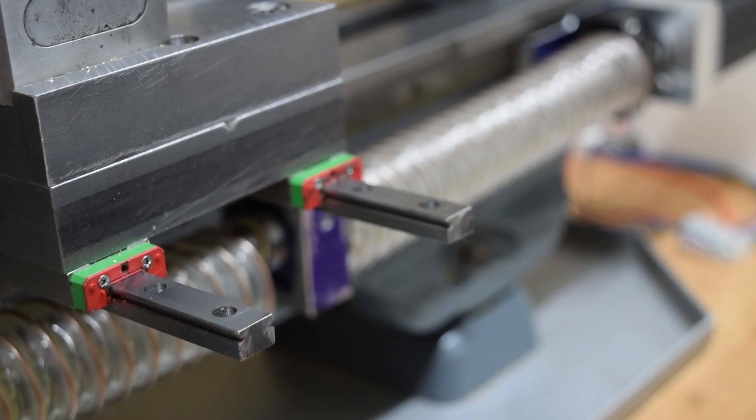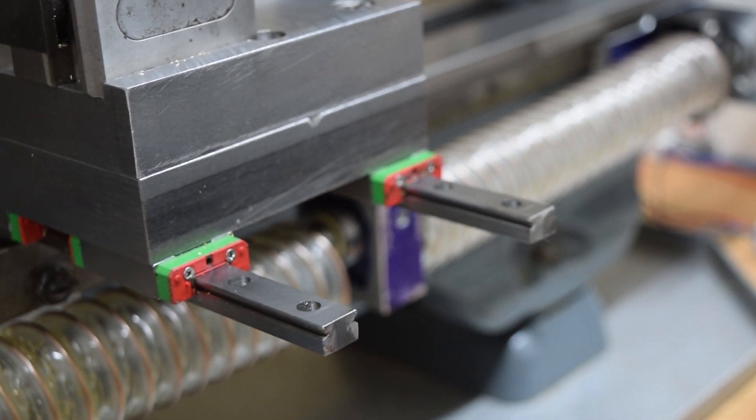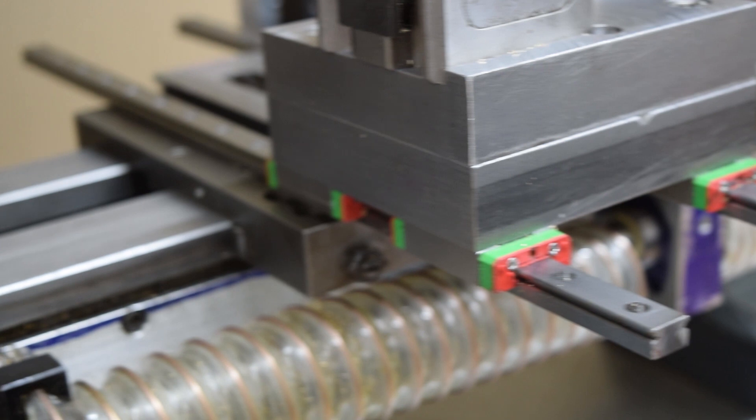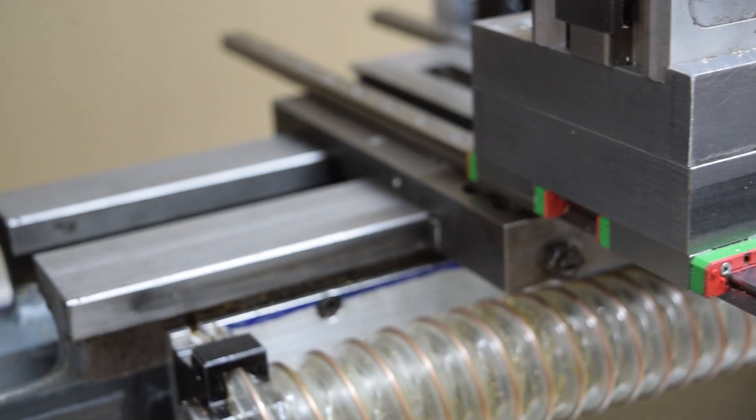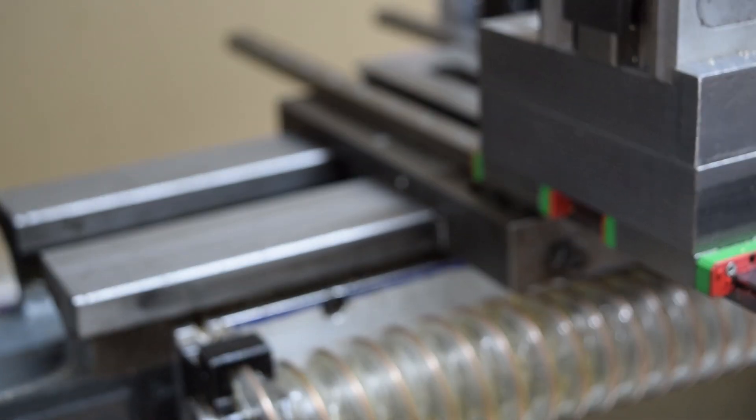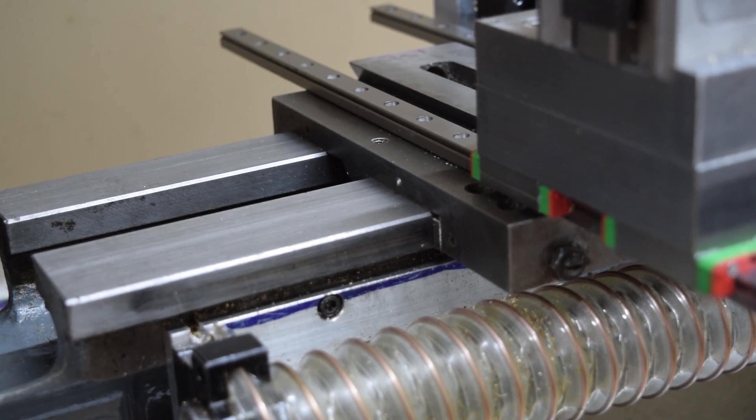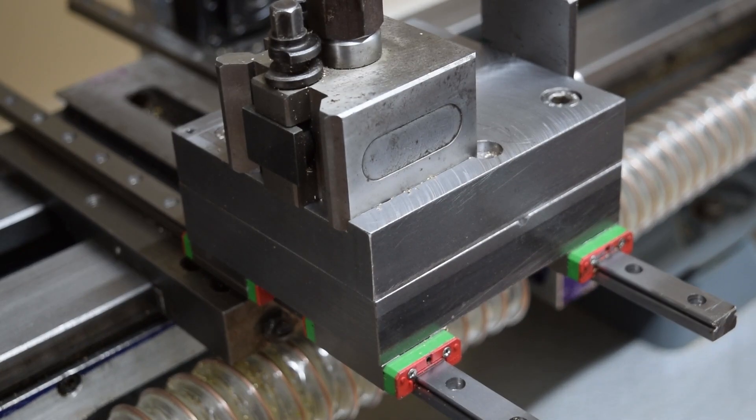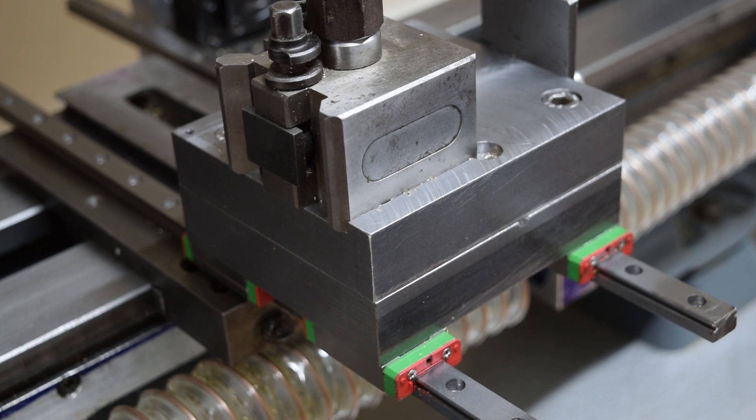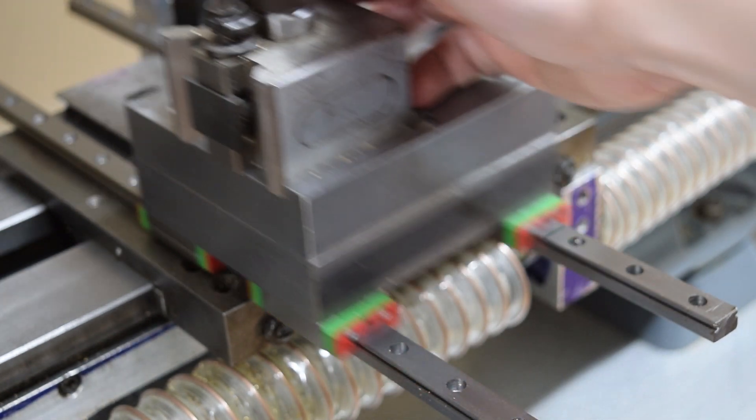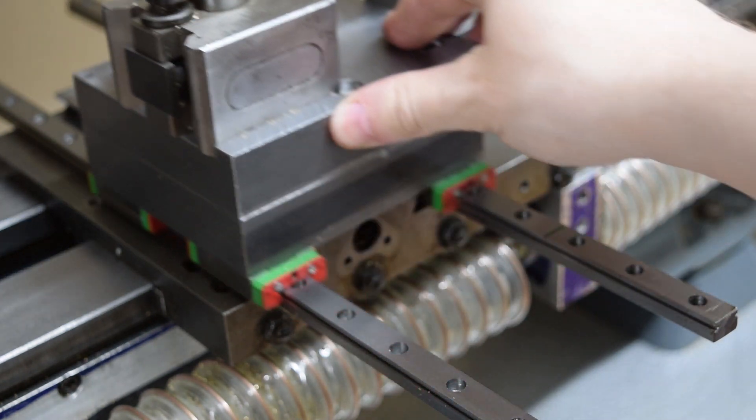You can see now the rails bolted down to the saddle and how the two halves of the toolpost mount work together, bolting down onto the rail blocks and to each other. We can see the whole assembly minus the ball screw. It's a much more solid and rigid setup and allows nice free movement.